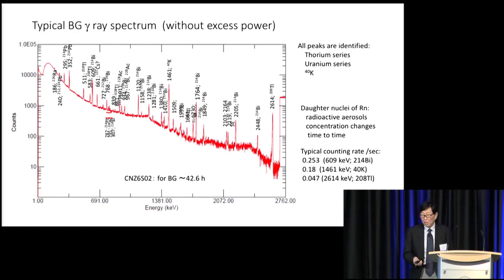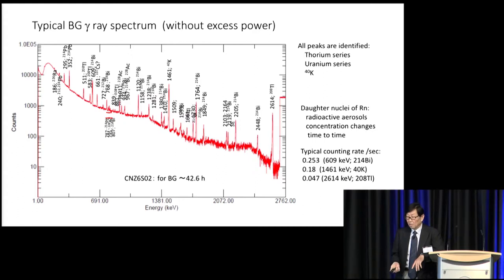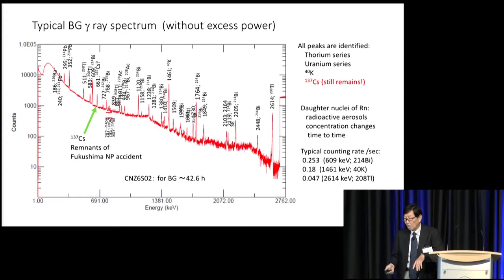This is a typical background gamma ray spectrum. This data was taken without excess power. You can see lots of peaks in this spectrum, and all peaks can be identified. They are from the thorium series, the uranium series, and also potassium-40. We also know the daughter nuclei of radon — that's a source of radioactive aerosols — so the concentration of this background is changing over time. We should be a little bit careful if we observe something. Also, we see the peak of cesium-137, which is just a remnant of the Fukushima nuclear plant accident. We still have that, but at a very low counting rate right now.